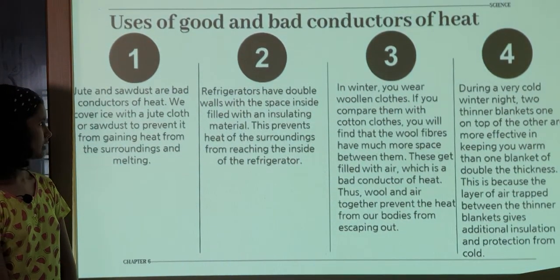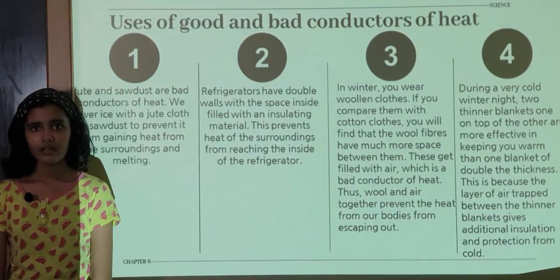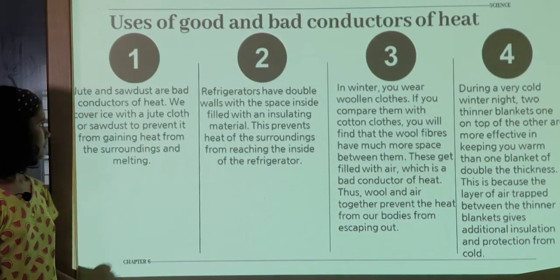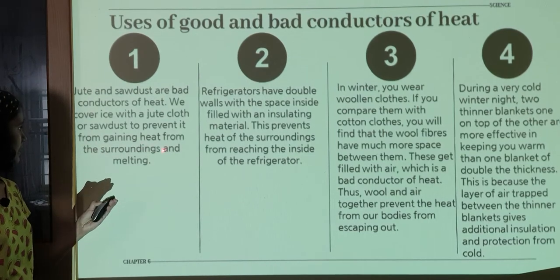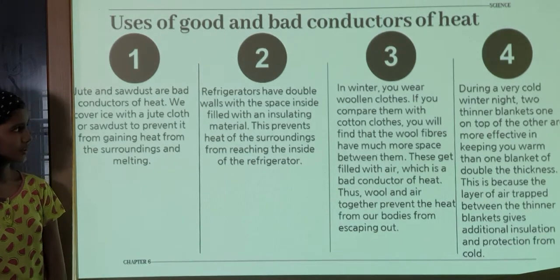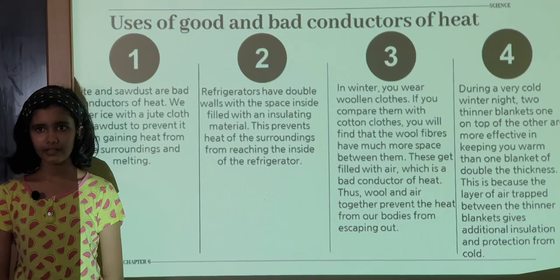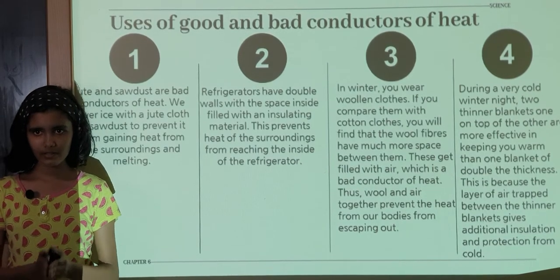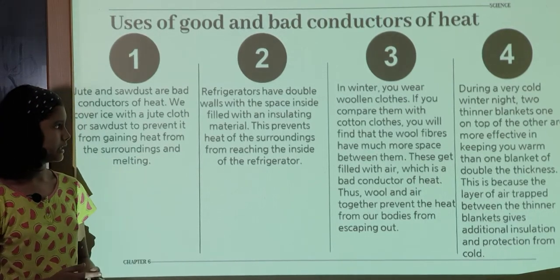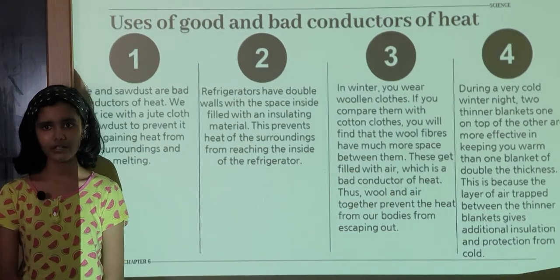Uses of good and bad conductors of heat. Jute and sawdust are bad conductors of heat. Ice is covered with jute cloth or sawdust to prevent it from gaining heat from the surrounding and melting. Refrigerators have double walls, and in the middle of the double walls there is an insulating material. This insulating material prevents the heat of the surrounding from reaching the inside of the refrigerator, thus keeping it cool.